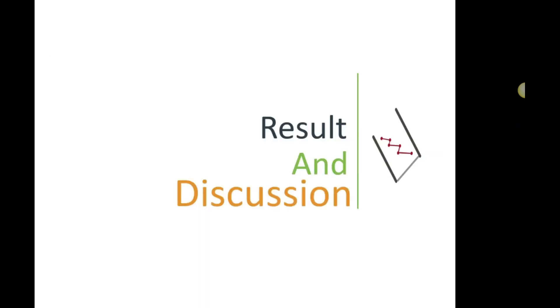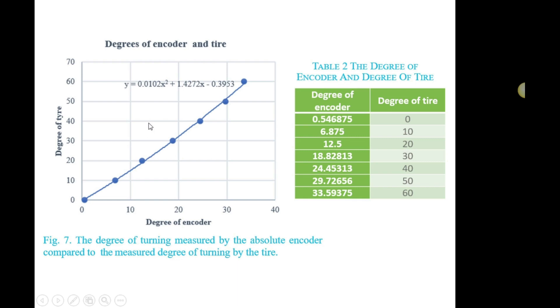Now we move to results and discussion. To perform the experimental work in the laboratory, the autonomous vehicle is controlled manually using a joystick. The joystick is the user input. By using this method, the degree of the tire and the degree of the absolute encoder can be obtained and controlled. The results are illustrated in Figure 7 and Table 2.